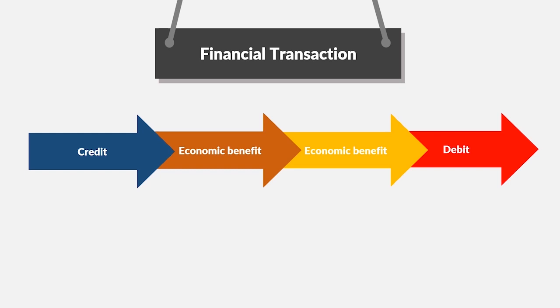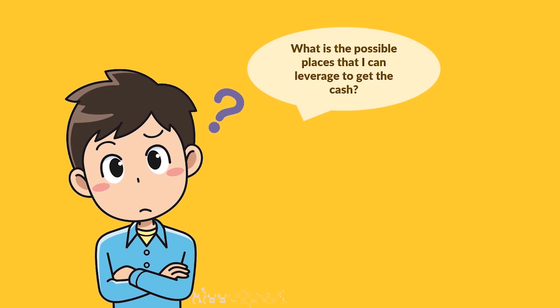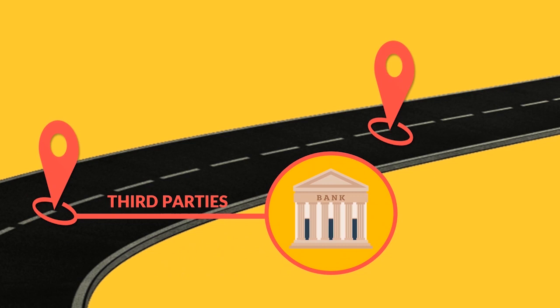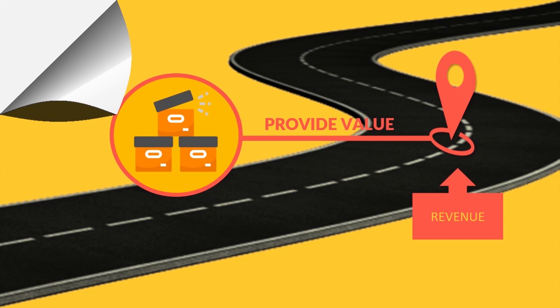Let's go back to my pancake business from our last videos. In order to keep everything functioning properly, as a business owner, cash is always my biggest concern. The question at the end of the day is: where does my cash come from? There are exactly three places. First, cash can come from third parties that I can borrow from, like a bank — we call that liabilities. Second, cash can come from myself or shareholders — we call that equities. Third, cash can be earned through providing value, selling a product or service — we call that revenues.